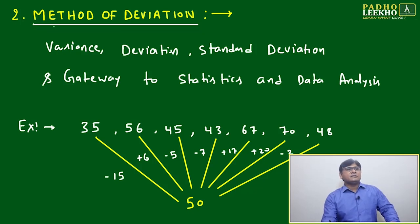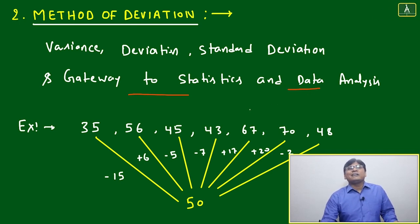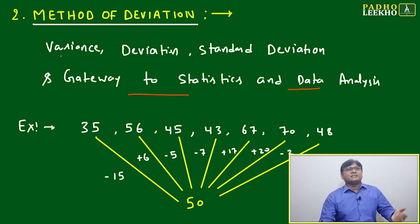The second understanding of this chapter, this session, is the method of deviation. Method of deviation is a way to understand average in a different way. This will give you the gateway to statistics where we will use this concept for data analysis or to understand statistics based on the deviation. We will be able to calculate variance, deviation, or standard deviation, and these three terminologies are pillars of statistics.